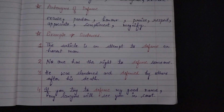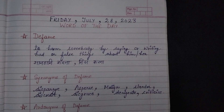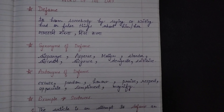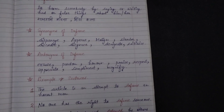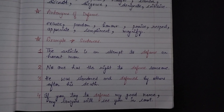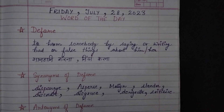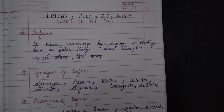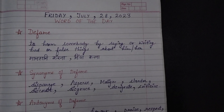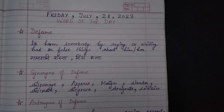So this is the whole description of the word defame, which means to harm somebody by saying or writing bad or false things about him or her. We discussed the meaning, the synonyms, the antonyms, and example sentences. Subscribe to my YouTube channel for daily English vocabulary — Universe is Unique. Thank you so much everyone for watching my videos daily. I am so grateful to all of you. Thank you so much for watching.